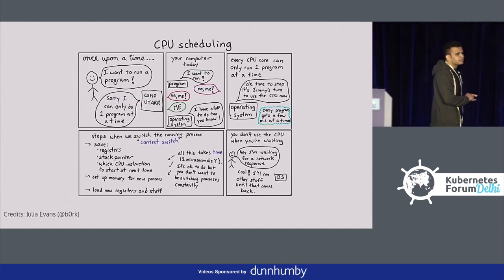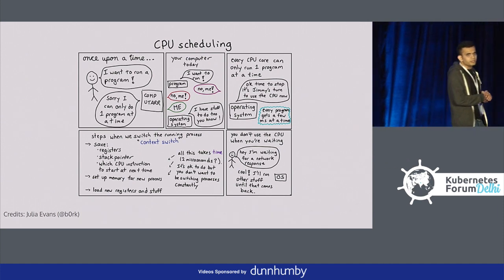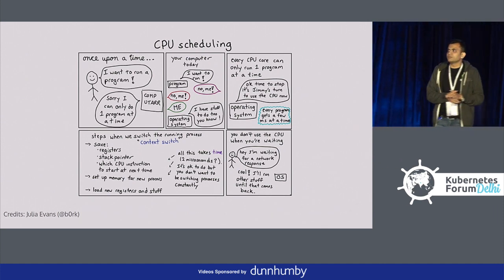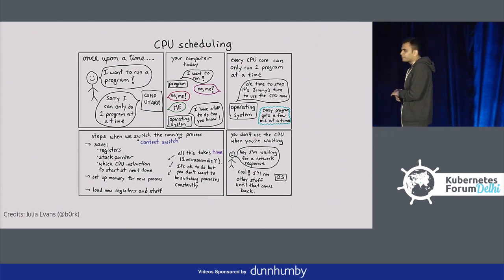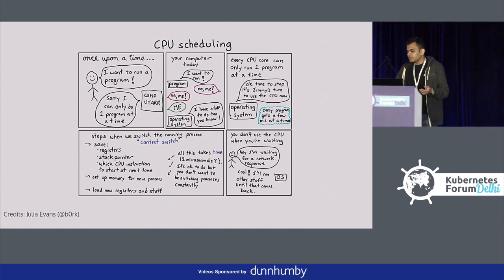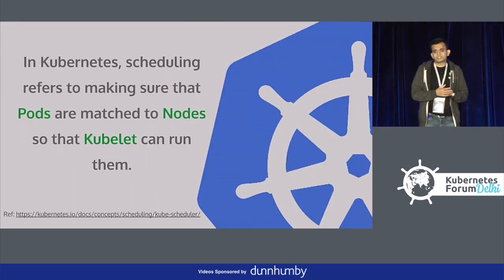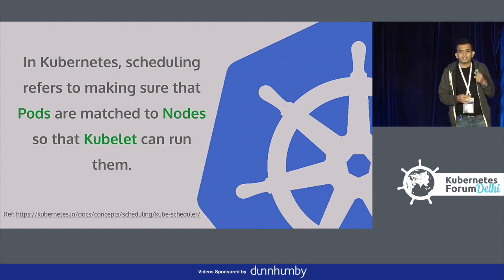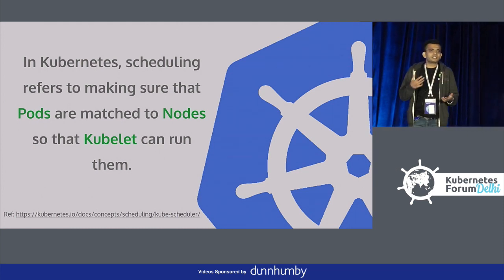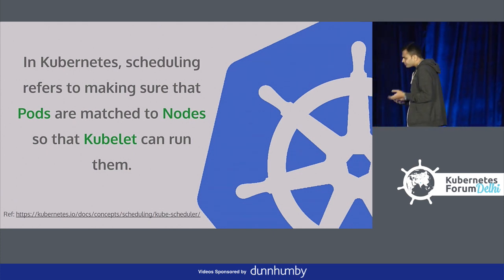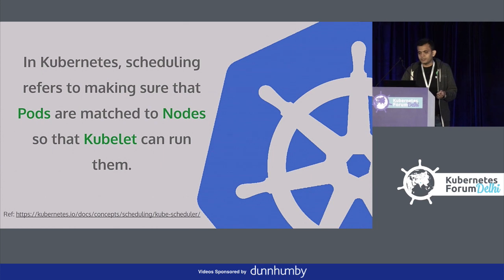Scheduling is not new to the computer science community. Most of us would have heard about scheduling the first time we studied computer science — about CPU scheduling. In Kubernetes it is something similar, although a bit different. Scheduling is basically figuring out how a pod is matched to a node so that the Kubelet can actually start the pod and run it on the node.